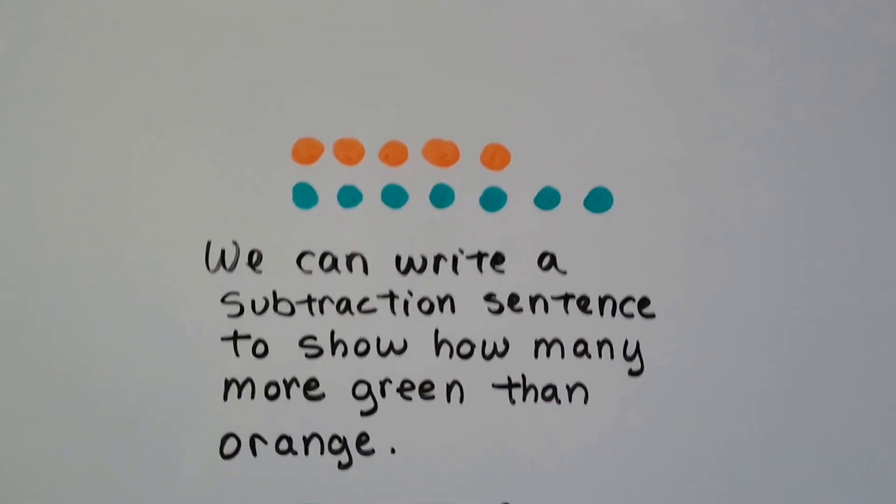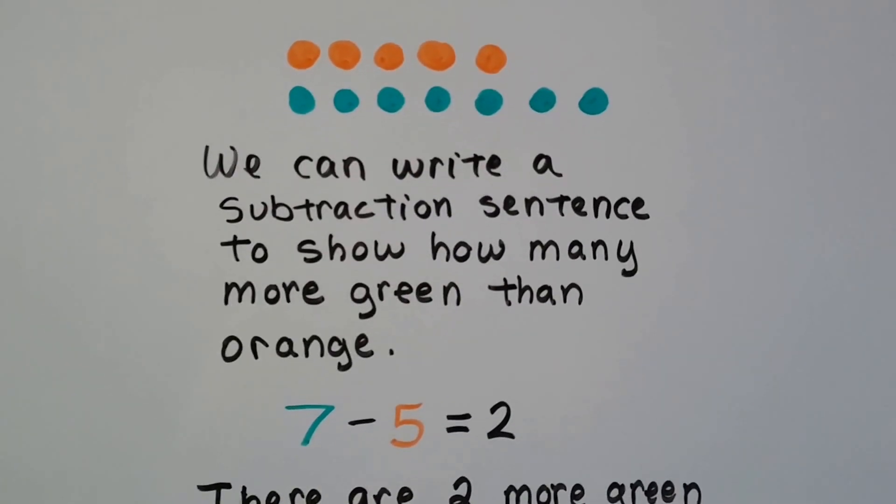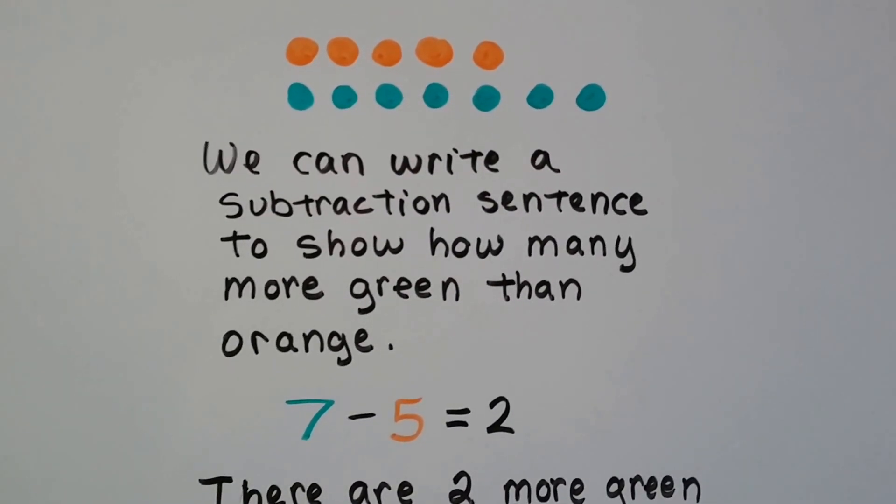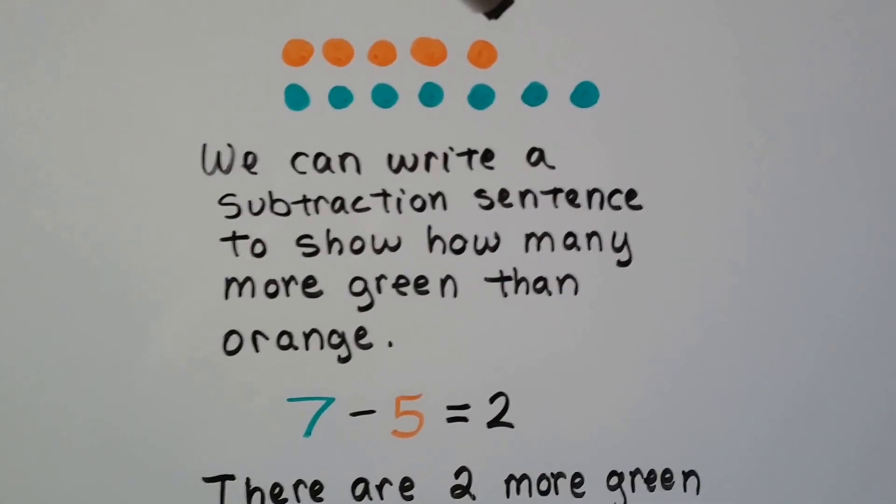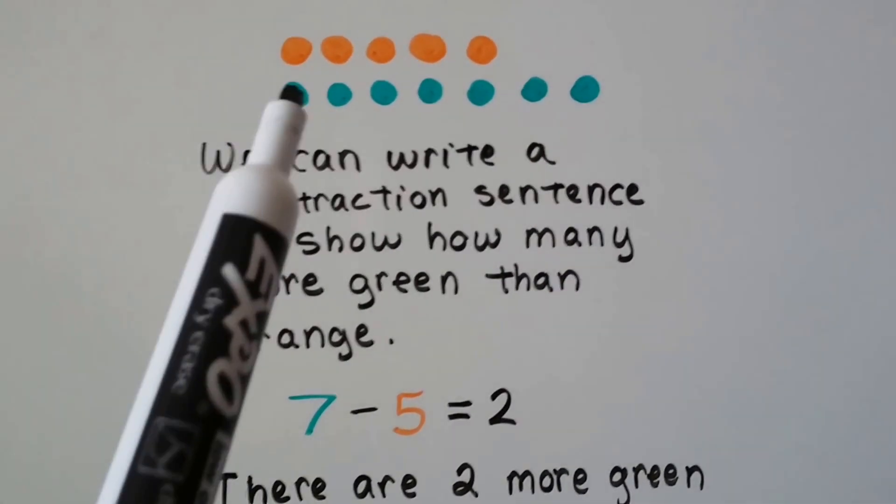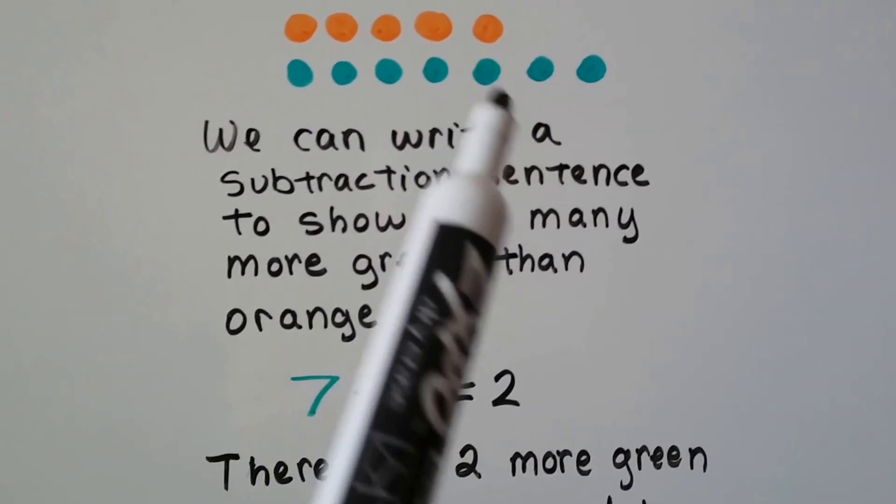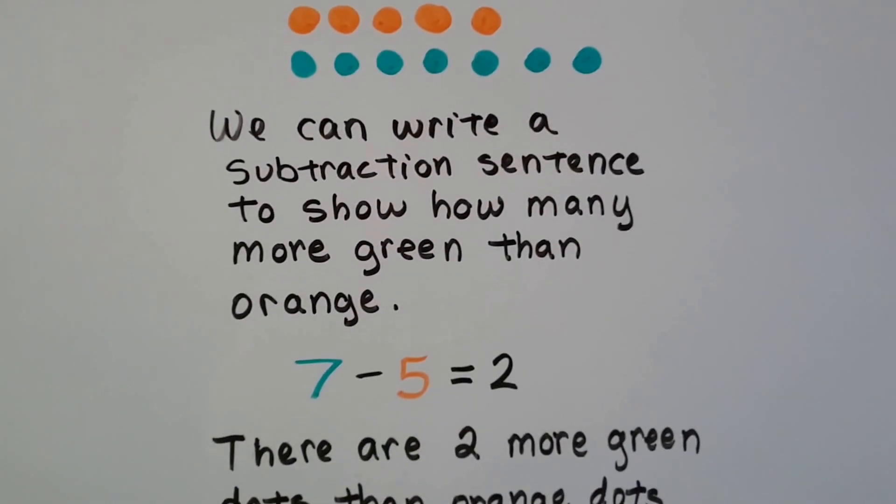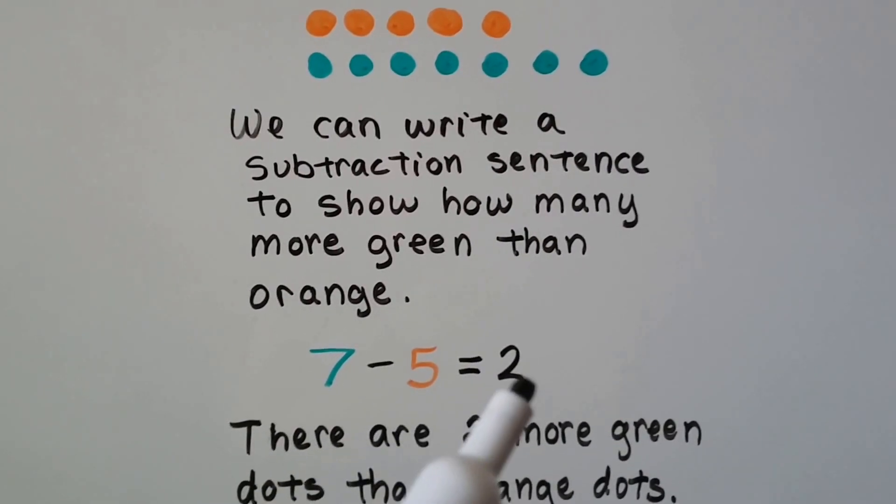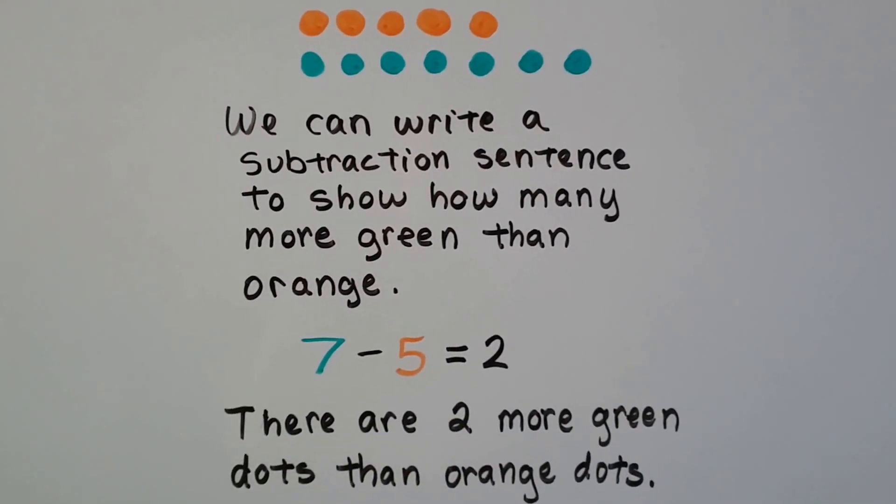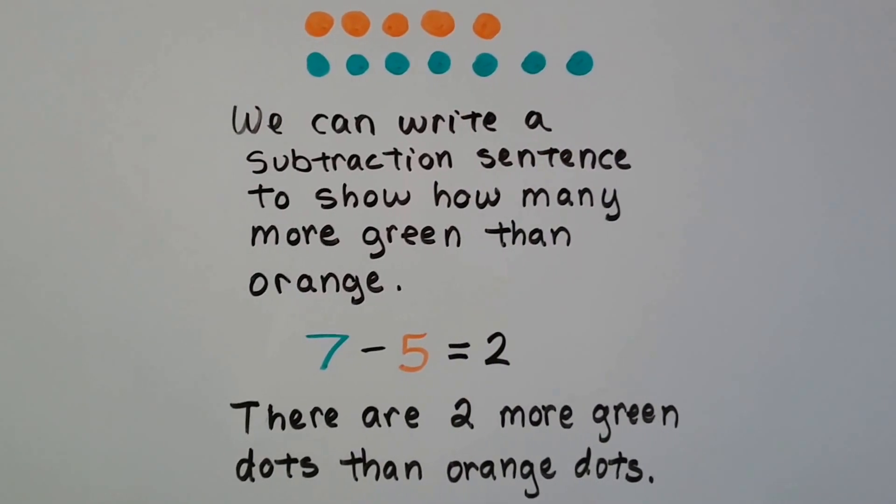And we can write a subtraction sentence to show how many more green than orange we have: 1, 2, 3, 4, 5 orange ones, and we have 1, 2, 3, 4, 5, 6, 7 green ones. 7 minus 5 equals 2. That means there's 2 more green dots than orange dots.